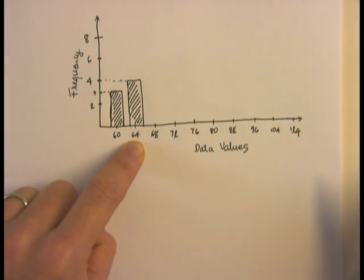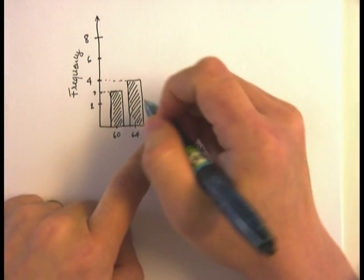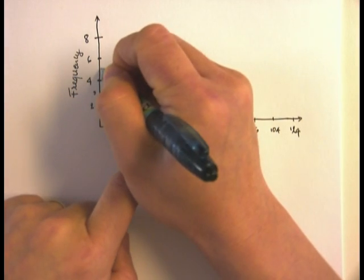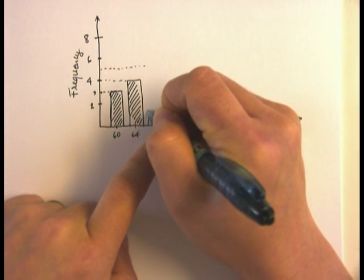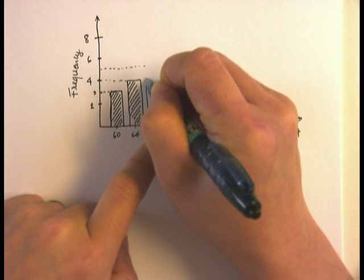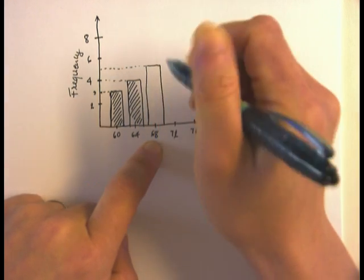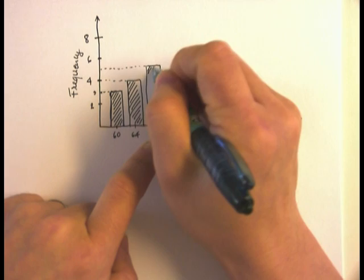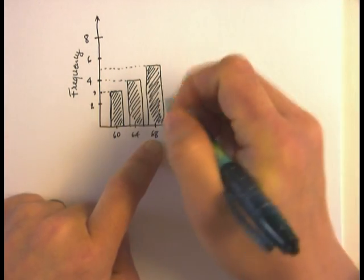For 68, I have a frequency of 5. Five is midway between 4 and 6, so right on top of 68, I'm drawing a rectangular bar of height 5. Here it is.